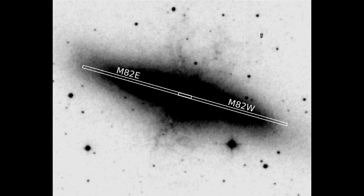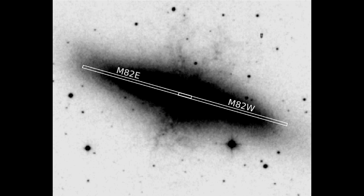We used the CO stellar absorption bandhead at 2.29 microns, which originates in the atmospheres of cool, evolved stars, to measure the rotation curve, and Figure 3 in our paper shows our results.